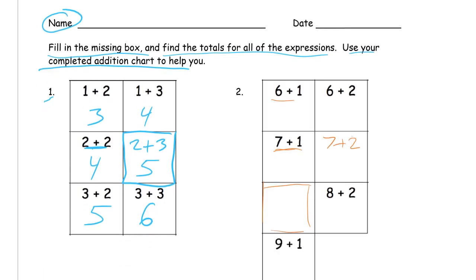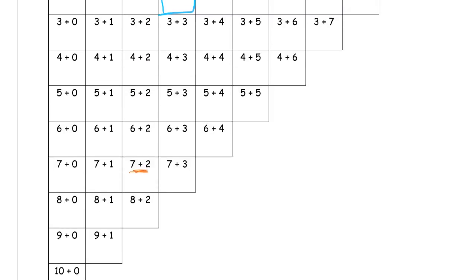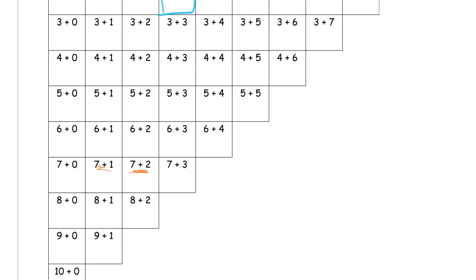All right, then we've got 8 plus 1 and 9 plus 1. So you might be able to guess that, but if you want to look at the chart, you could say, okay, what's under 7 plus 1? And look at the chart. Here's the 7 plus 1, and this is the one we're looking for. It is 8 plus 1, okay?